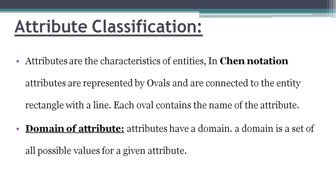Next, the domain of an attribute. The domain is nothing but the possible values for a given attribute. For example, student is an entity and student number is an attribute. The student numbers are 1, 2, 3 and so on. The set of possible values for an attribute is called the domain of the attribute.